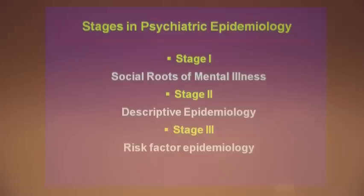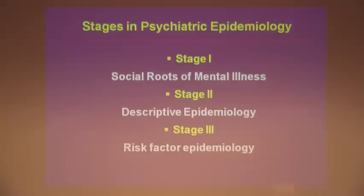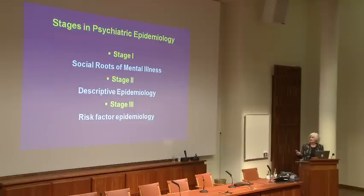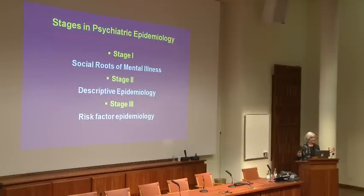To review the stages of psychiatric epidemiology: the era before the 1950s was when we studied the social roots of mental illness. For the 50 years prior to that, people were interested in societal causes of mental disorders and focused on social class, urbanization, social stress, as well as things like infection and nutrition — factors we're beginning to come back to now as we examine risk factors for psychoses and major mental disorders.